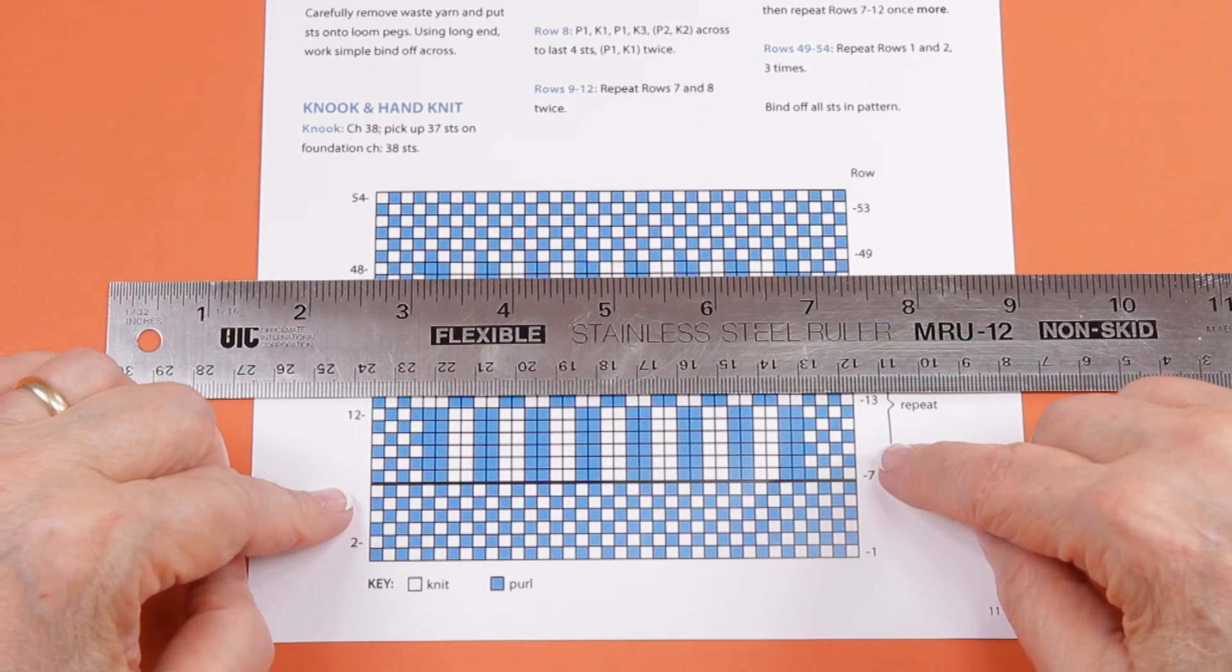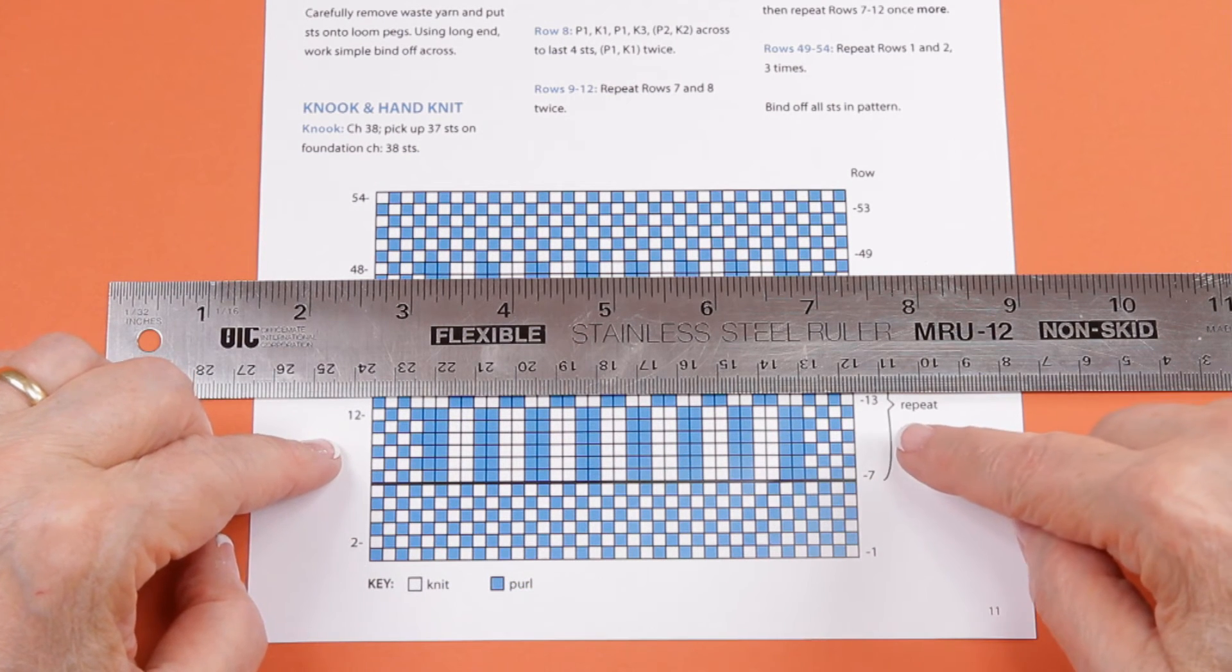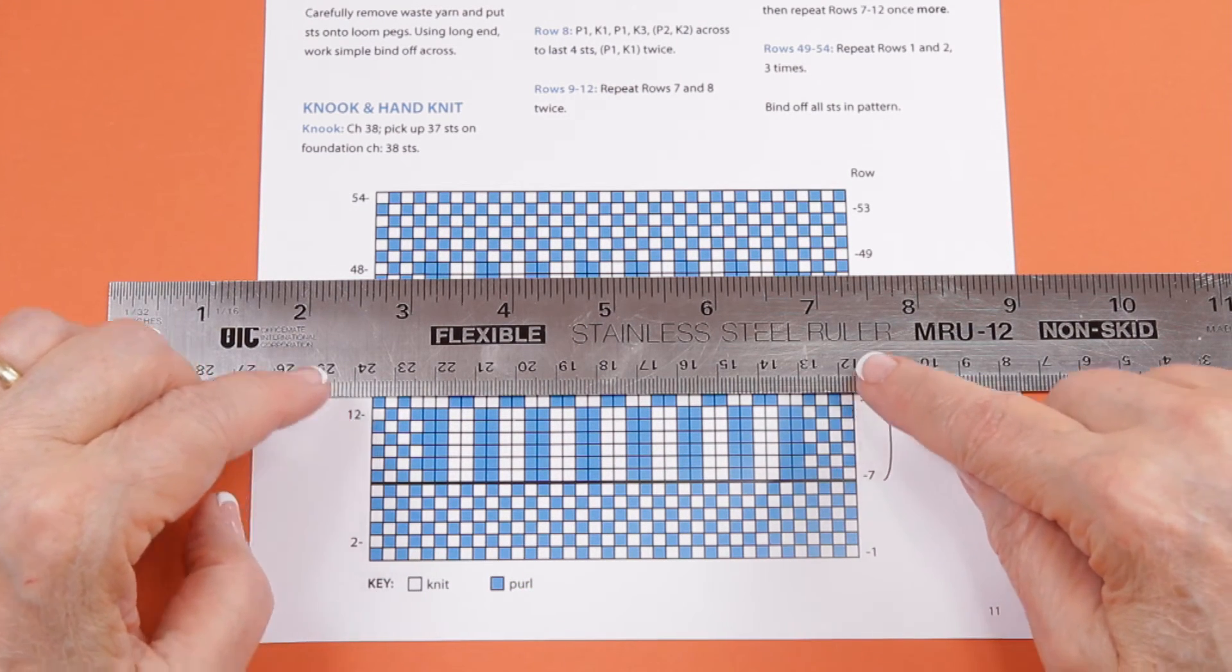So if you're going from the right to the left, or left to right, this is what your fabric will look like.